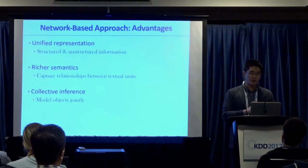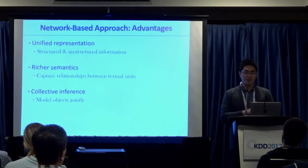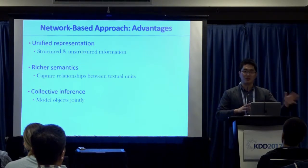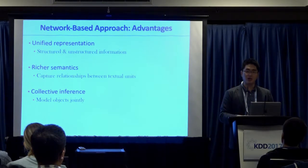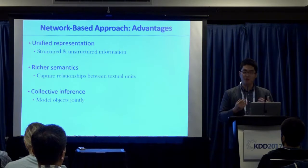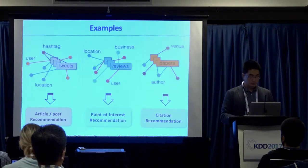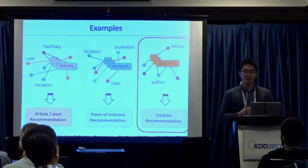The same happens for point-of-interest recommendation — you have reviews and businesses, and reviews can include sentiment terms or aspect terms as part of the network. The great thing about this representation is first it unifies both structured and unstructured things. Another benefit is it carries richer semantics, and technically the most attractive property is that we can make collective inference on this network — over both the structural part and the text part. Taking the heterogeneous information network approach is a very nice form for collective inference.